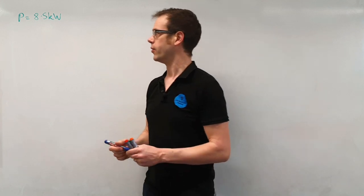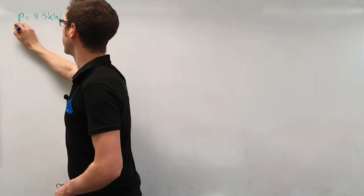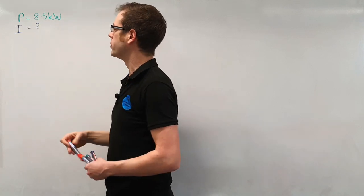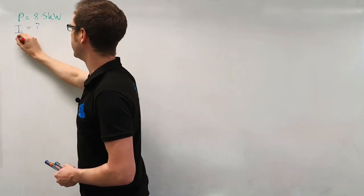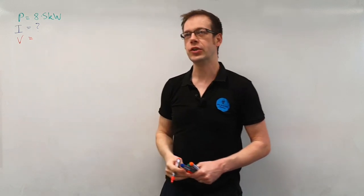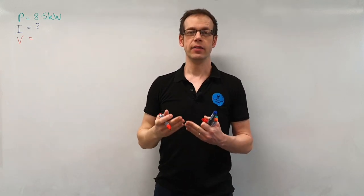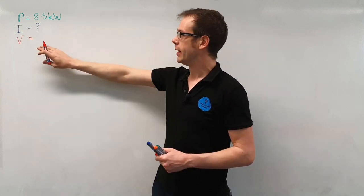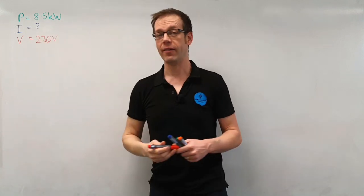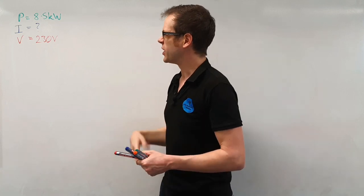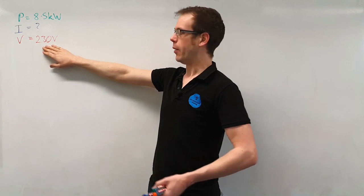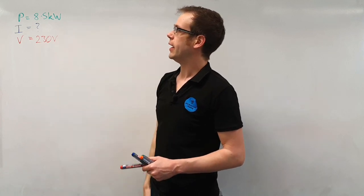Now we're trying to find the current in this video so we want to know what is the current going to be drawn by this shower, so I equals something we don't know yet. And we're also interested in, in order to calculate that current, we'll need to know what the voltage is. Now in the case of the voltage we know that the nominal voltage in the UK is 230 volts. We know that we can find that varying, it can go up or down from that value, but generally speaking when you do design work we use the nominal voltage which is 230 volts.